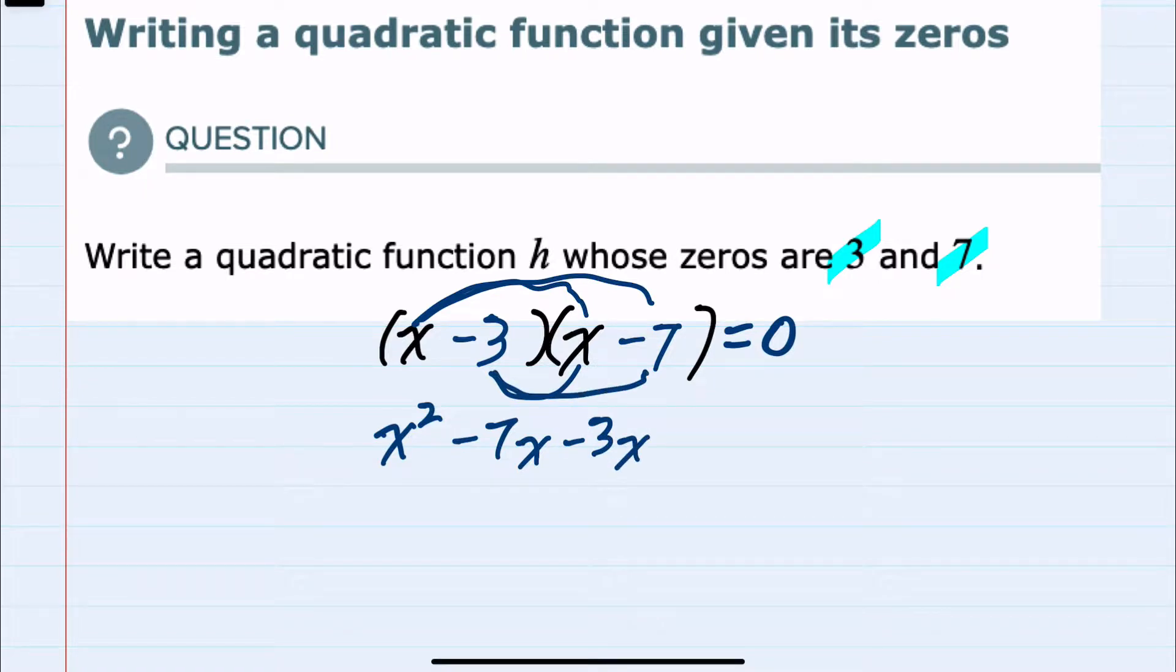Minus 3 times minus 7 is a plus 21. And I can clean this up by combining like terms. We would have minus 7 minus 3x is a minus 10x. Bring down the plus 21.